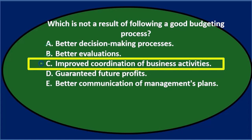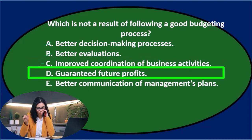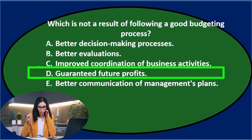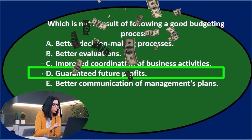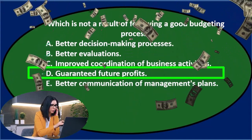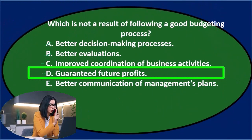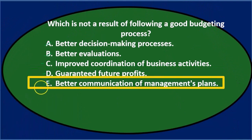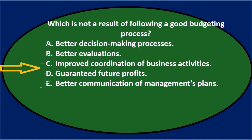C says improve coordination with business activities — I would think so, I'll keep that open. D says guaranteed future profits. Obviously we're going to hope to budget for future profits, but does it guarantee future profits? E says better communication of management's plans — the budget would do that. So we're down to C and D: improve coordination of business activities, or guaranteed future profits.